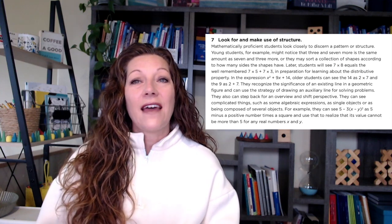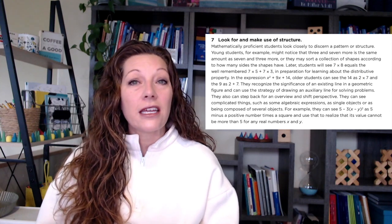It states that mathematically proficient students look closely to discern a pattern or structure. Basically, students need to always be looking for patterns, applying them, and making conjectures based upon their discoveries. Like, when we add one, it's always the next number when we count. Or, six times five is the same as five times six, and four times three is the same as three times four — so if we switch numbers around when we're multiplying, it doesn't matter, the answer stays the same. Math Practice seven is about opening up the mathematics so that students have the opportunity to discover and use patterns, properties, and connections in order to become more flexible thinkers.